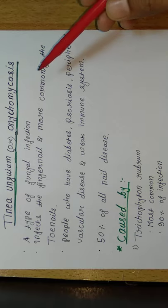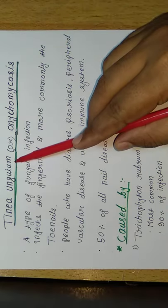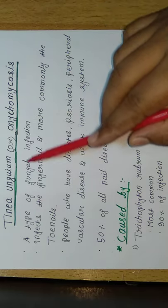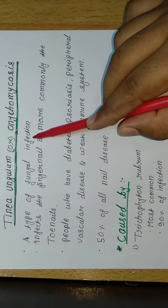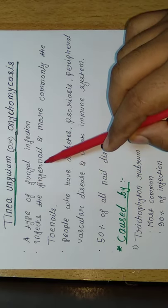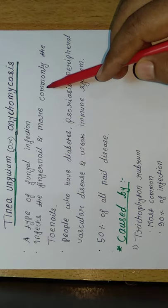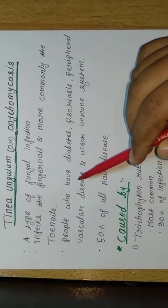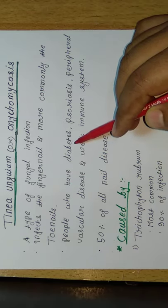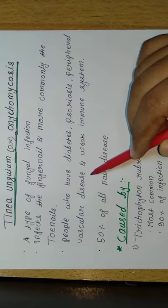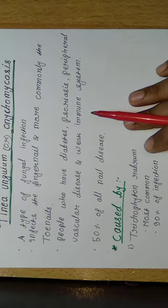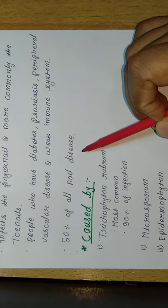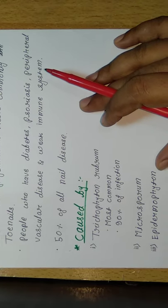Today's topic is all about tinea anguium or onychomycosis. Onychomycosis is a fungal infection that infects our fingernails, and more commonly it affects the toenails. Onychomycosis occurs in individuals who have diabetes, psoriasis, peripheral vascular disease, and weak immune system. 50% of all nail diseases are onychomycosis.